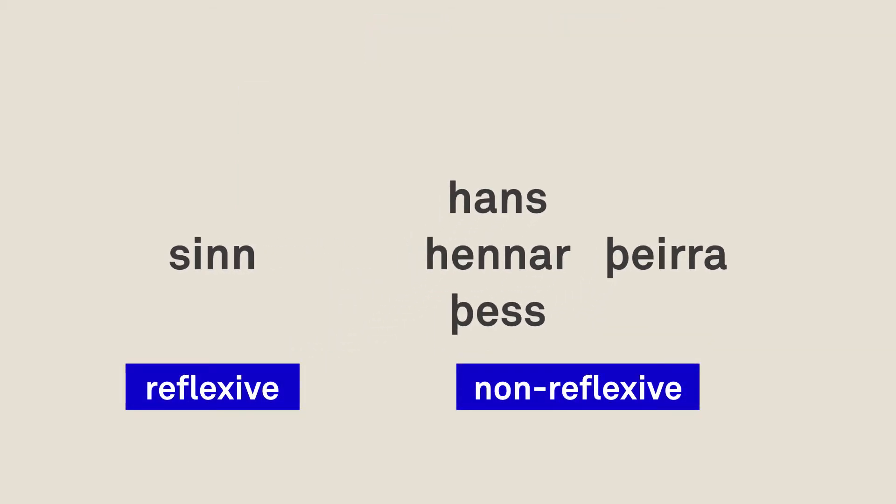Sín is what we call the reflexive form, which means it refers back to the subject of the sentence. The other forms — hans, hennar, þess, þeirra — are non-reflexive, so they refer to someone not mentioned in that sentence or clause. A good rule of thumb is that 'sín' can never be the subject of a sentence. So in a sentence like 'his car is old', that 'his' can never be translated as 'sín' — you'd have to use 'hans'.